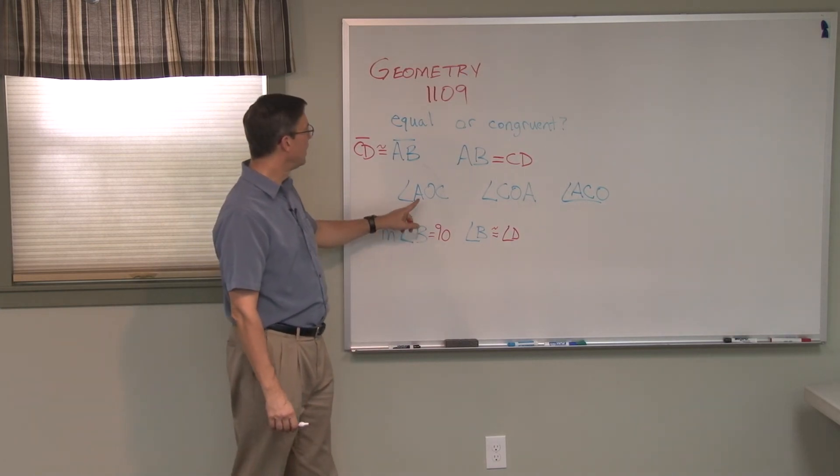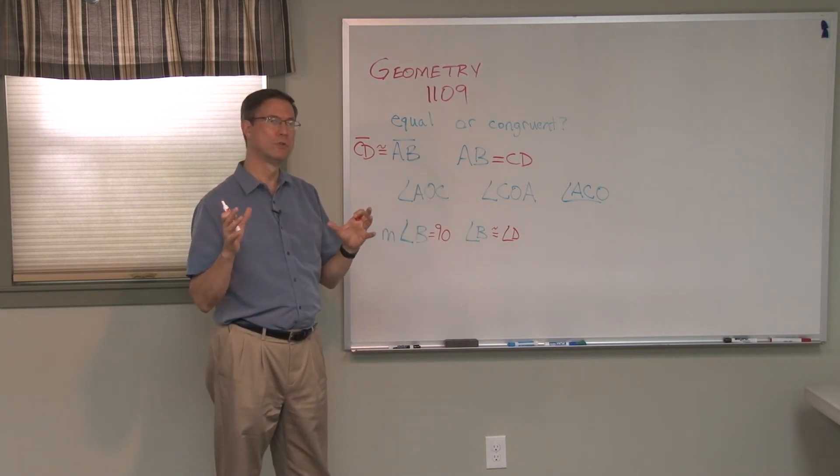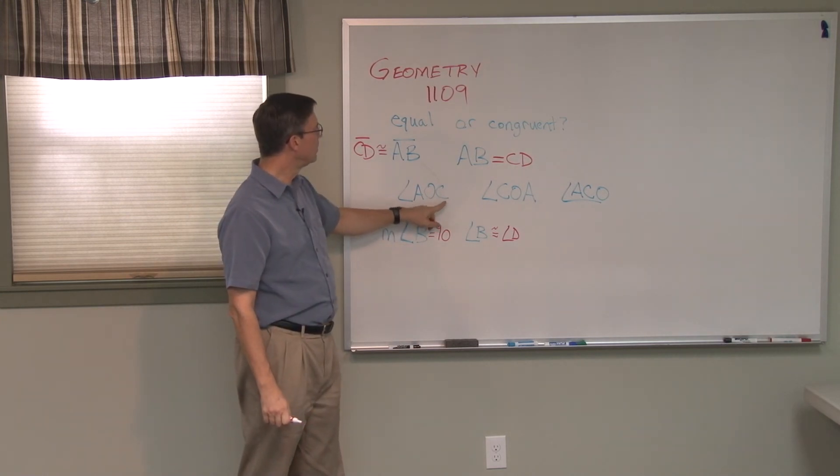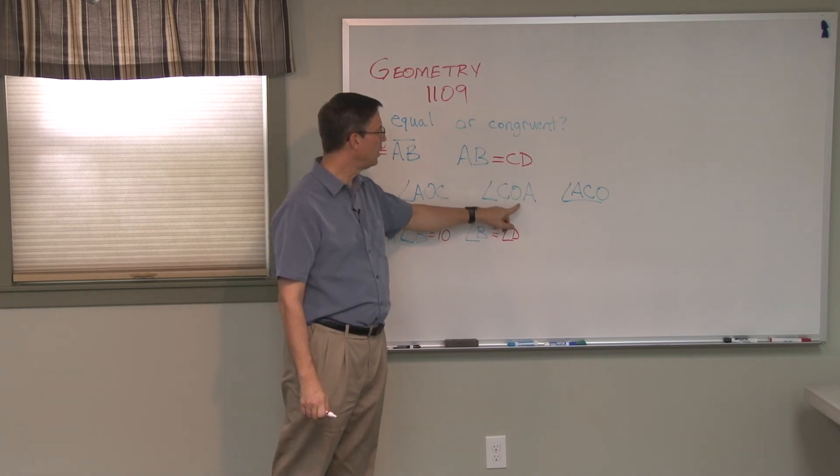You're trying to choose a name. Angle AOC is the same as angle COA. Let me demonstrate why. This would be referring to an angle where this is the vertex, and maybe point A is here and up here is point C.